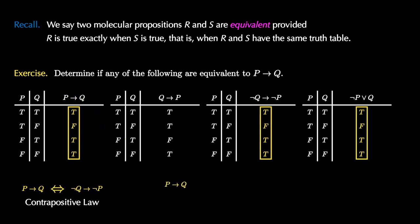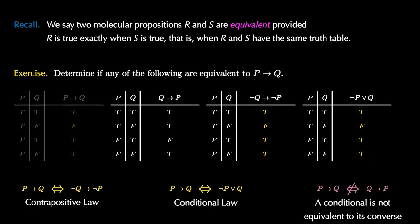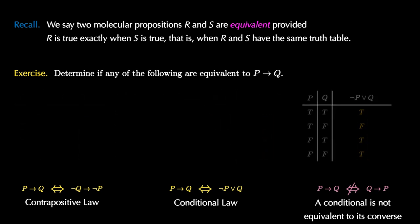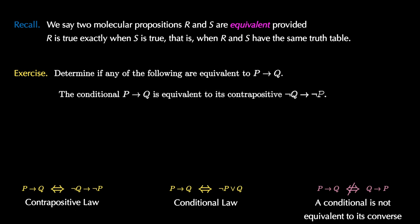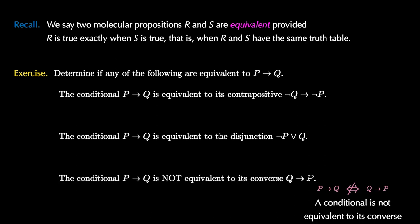P implies q is also equivalent to NOT p or q, and this is known as the conditional law. Finally, we see that p implies q is NOT equivalent to q implies p — a conditional is not equivalent to what's called its converse.